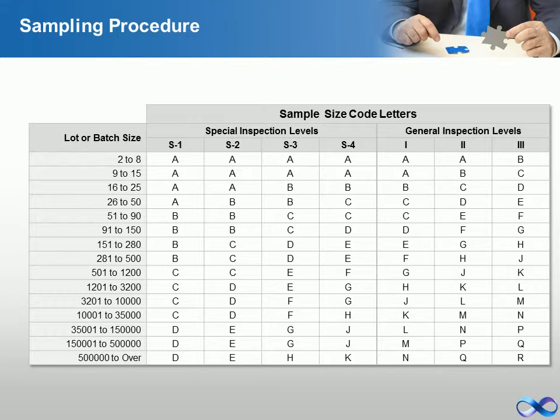A sampling scheme consists of a combination of a normal sampling plan (level 2), a tightened sampling plan (level 1), and a reduced sampling plan (level 3), plus rules for switching from one to the other.